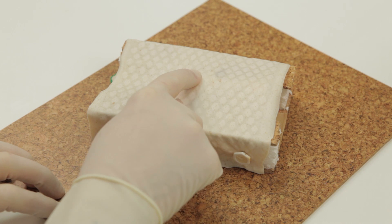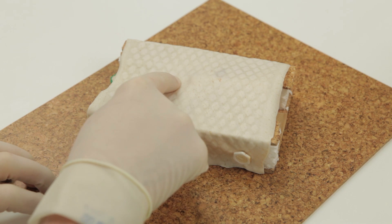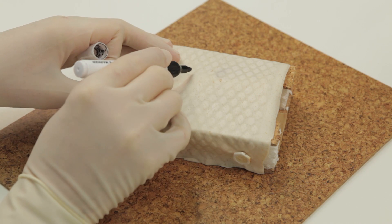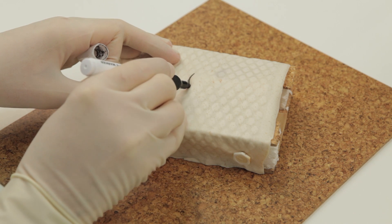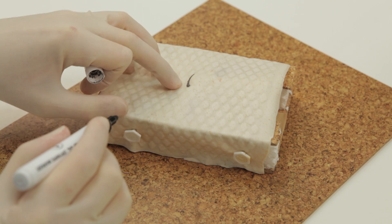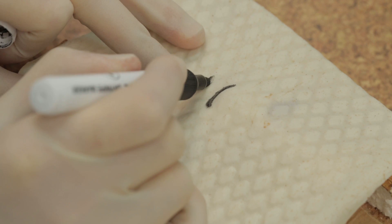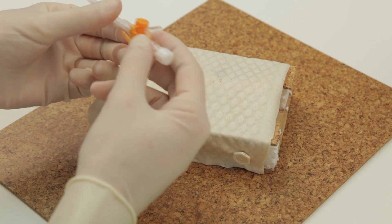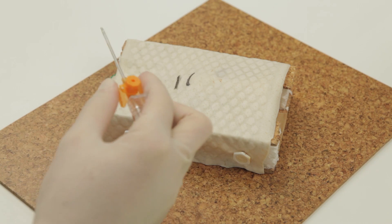In this station, we will demonstrate how to perform a needle cricothyroidotomy and emergency tracheostomy. This represents the thyroid cartilage, and this other line represents the cricoid cartilage. In between these two marks is the cricothyroid membrane.